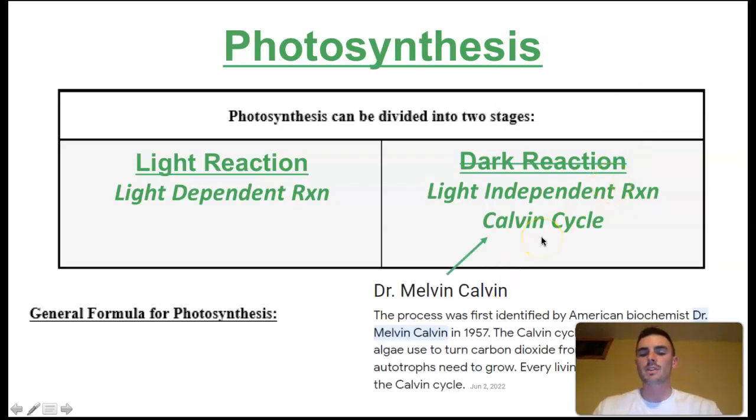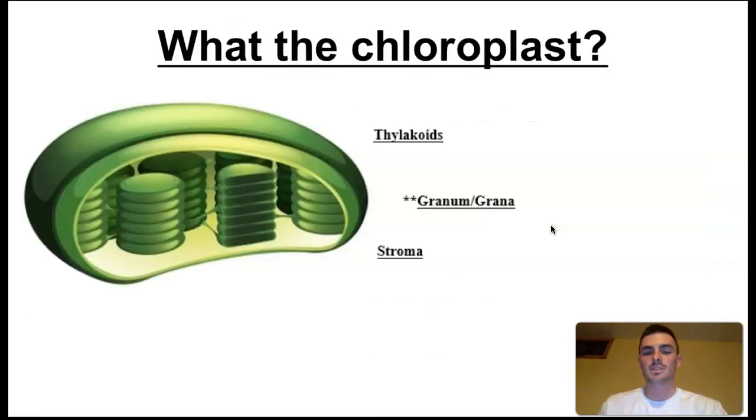More specifically, we'll also call it the Calvin cycle. That's because the guy who really focused on this was Dr. Melvin Calvin. The Calvin cycle is a process that plants use to turn carbon dioxide from the air into sugar. Really, this is about getting it all ready to go with light, and then the Calvin cycle is where we actually make that sugar.